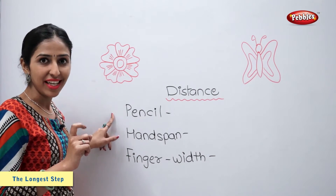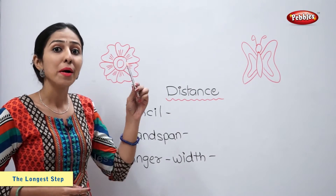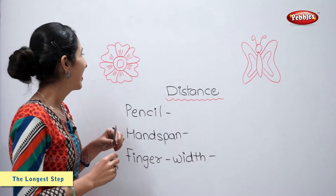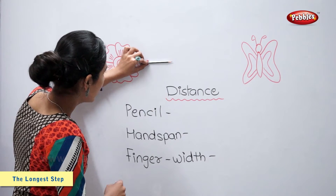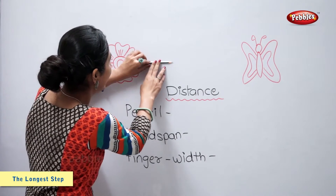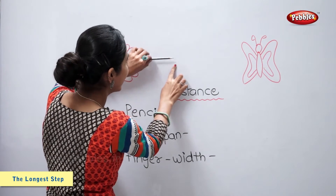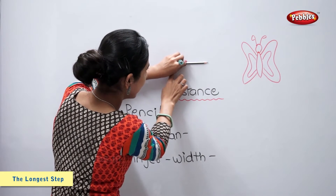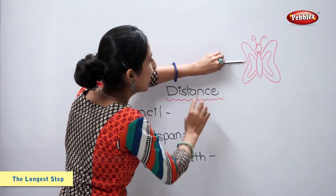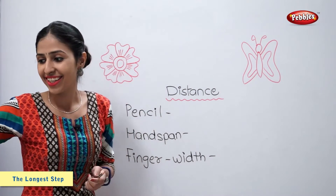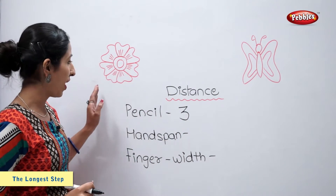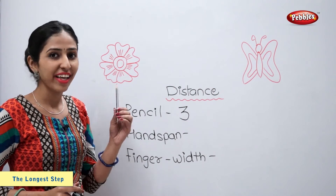First is pencil. So let's measure the distance using this pencil. One end near the flower. One. Two. And three. So the distance of flower and butterfly is three pencils.